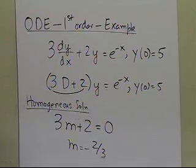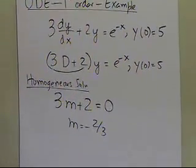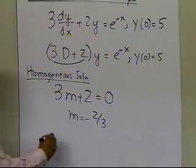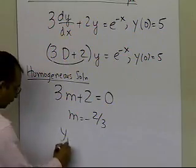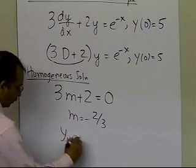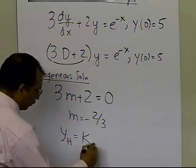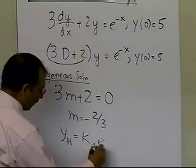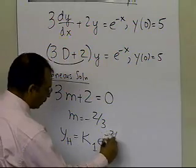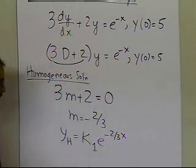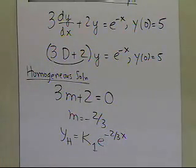Since minus 2/3 is the root of the characteristic equation, the homogeneous part of the solution will be k1 times e to the power of minus two-thirds x. That's what the homogeneous part of the solution looks like.